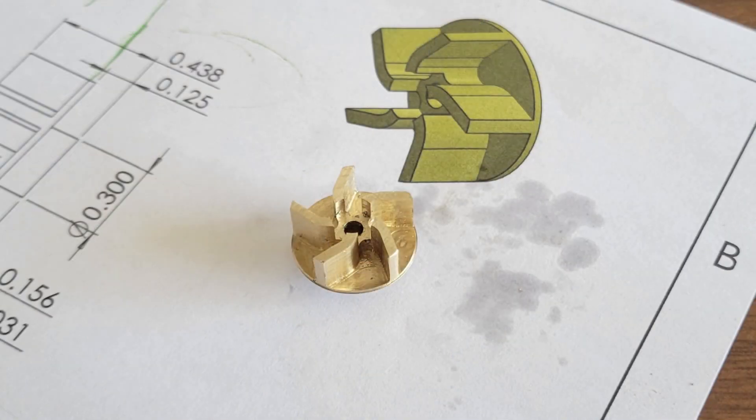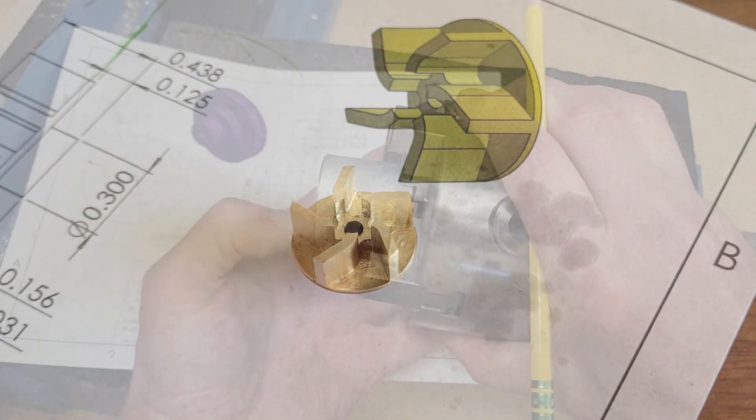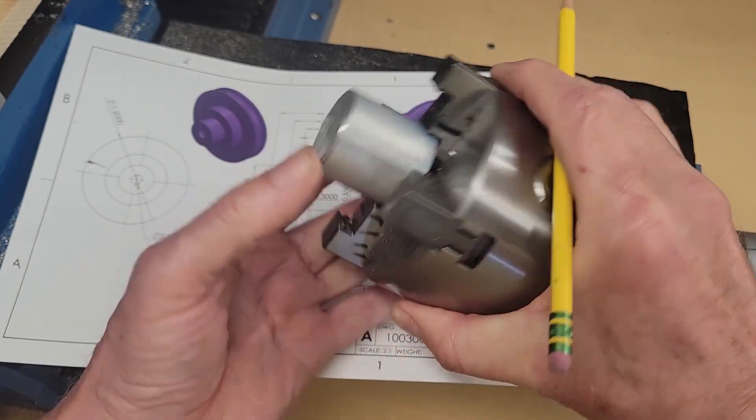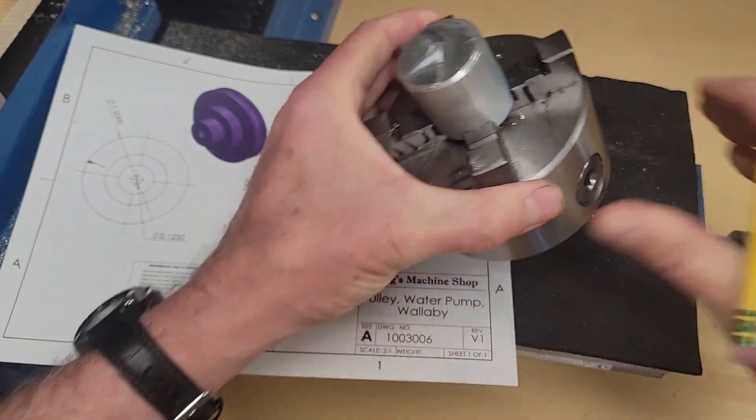There's our impeller done. All right, let's turn our attention to the pulley. So I found this one and a half inch aluminum round. We'll make our water pump pulley out of that.